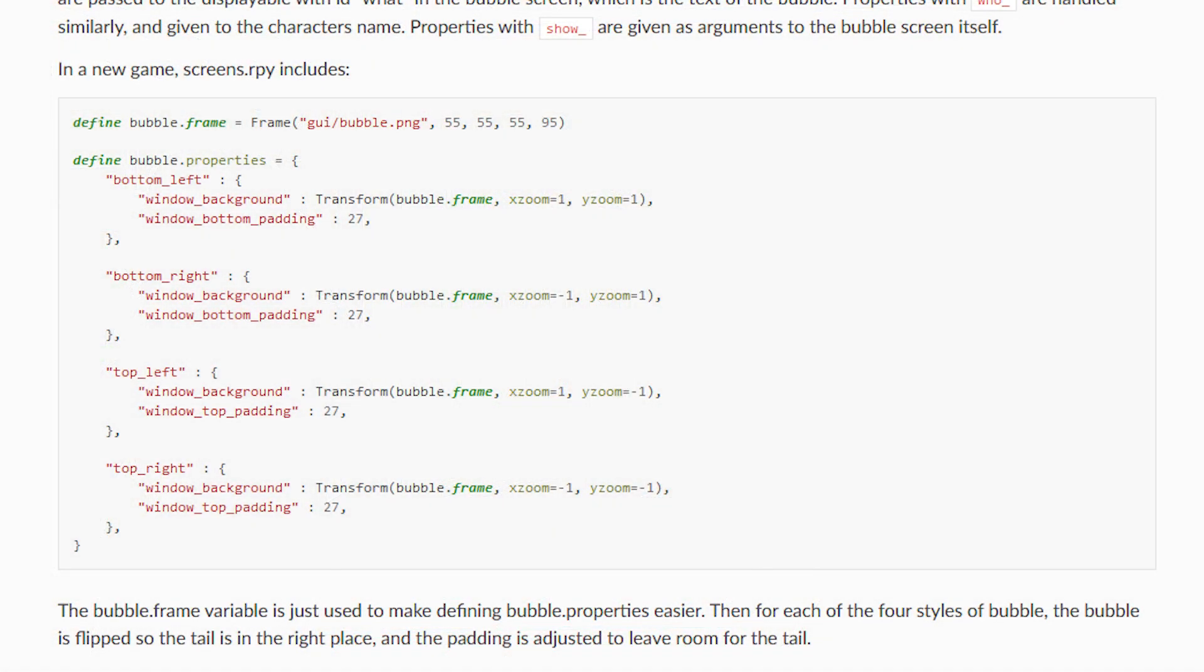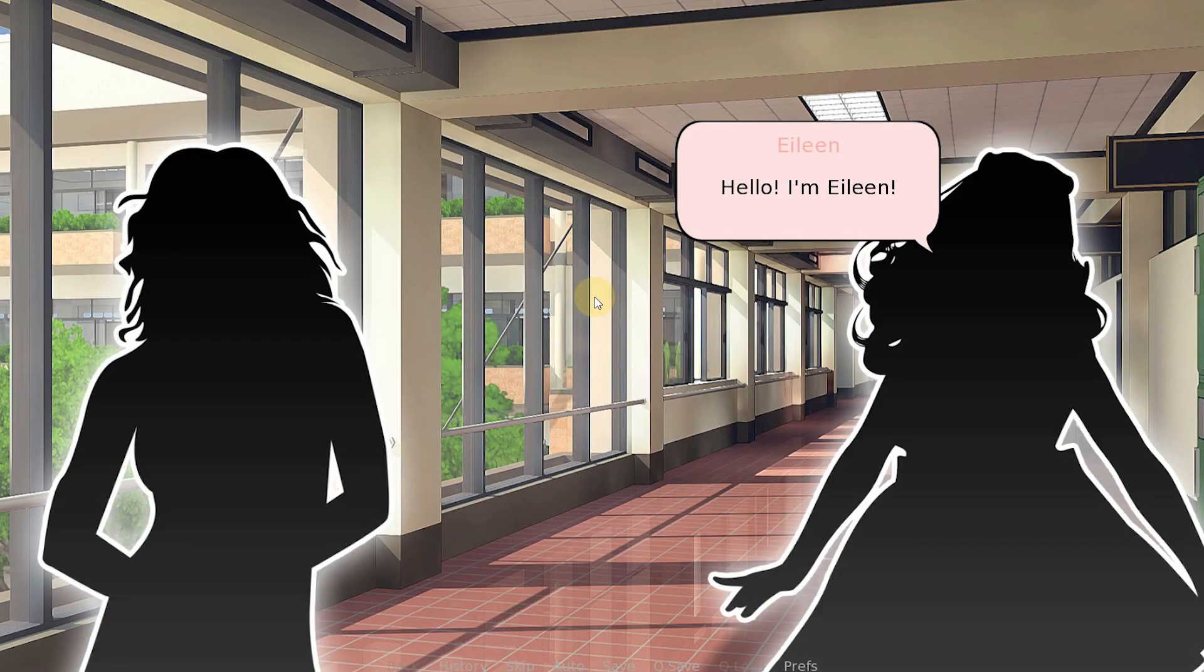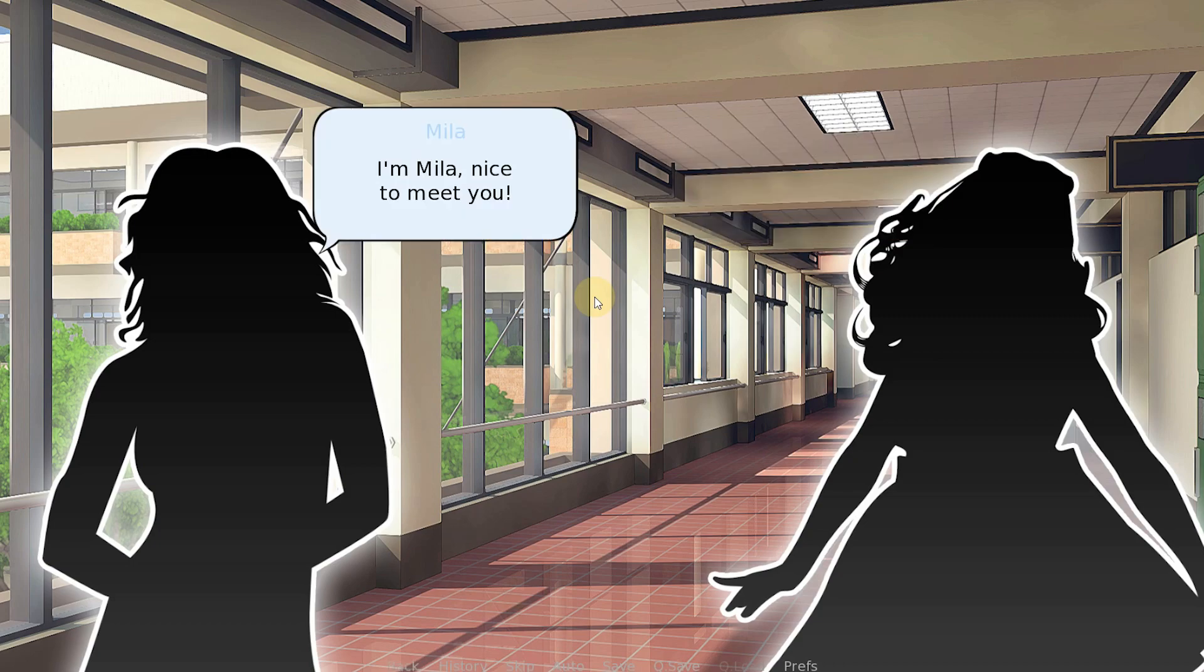For that, you will want to update the bubble properties dictionary to change the window_background property of the bubble you want to change. In this example, we want all bubbles in the game that have a tail in the bottom right to use the pink bubble, and for the ones with the tail in the bottom left, we'll use the blue bubble.